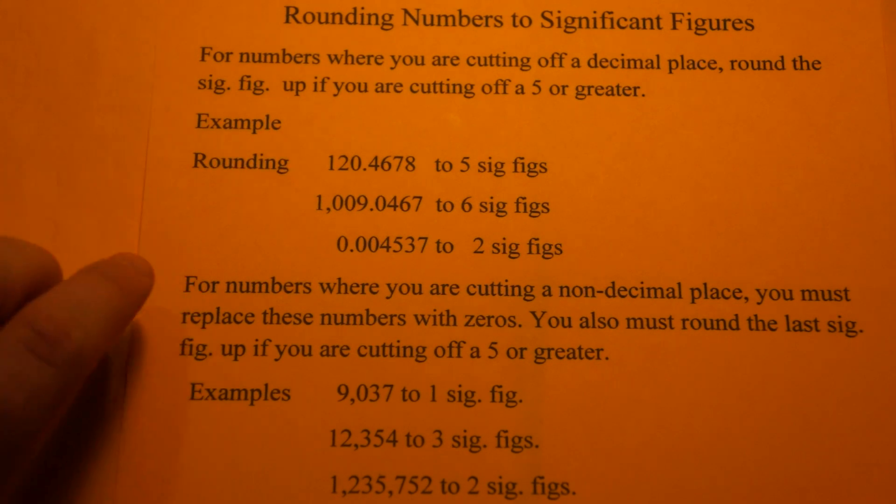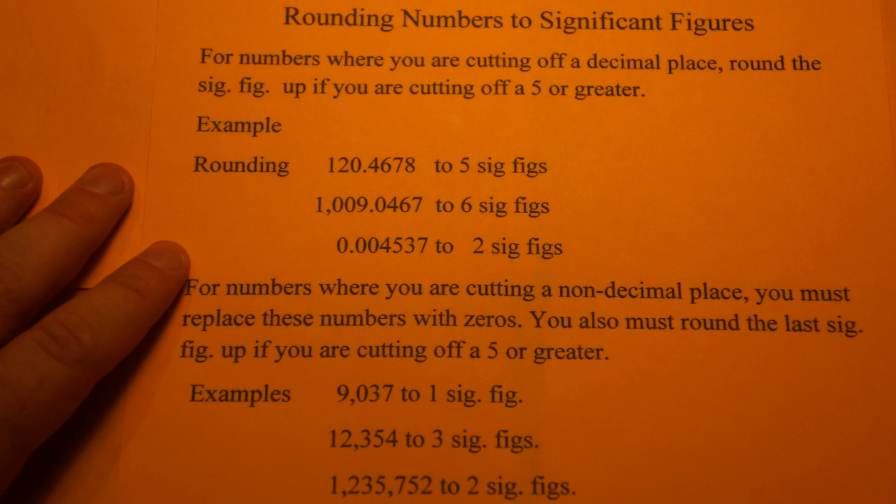So for numbers where you're cutting off a decimal place, round the sig fig up if you're cutting off a 5 or greater. So here's an example.